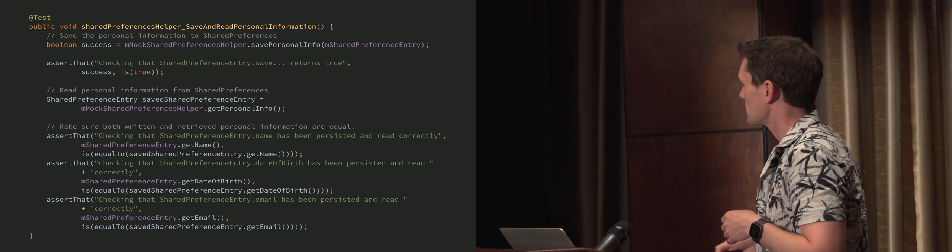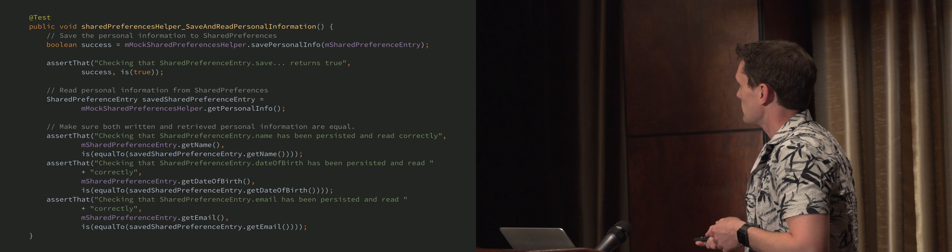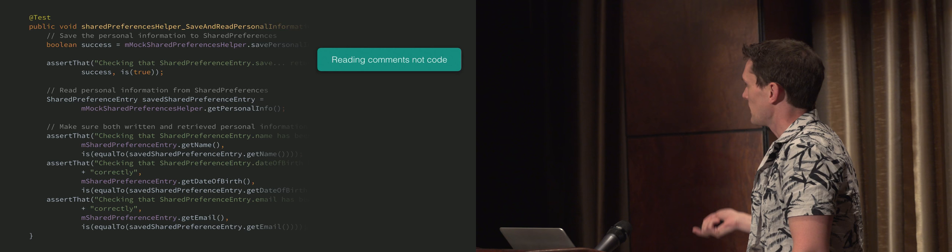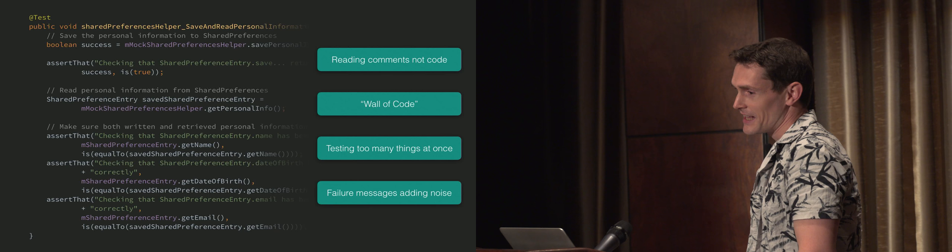I've taken various examples. Some of these are kind of anonymized slightly, some of them from public repos and things. This is an enormous block of code, and this is supposedly a single test. Don't try and parse too much of it — your head will explode. It's got all sorts of issues: there's comments all over it, and the comments are telling us that the code is not readable. We've got a wall of code here — it's a huge block. We're testing too many things. In fact, you can tell that because there's an 'and' in the test name, which is a dead giveaway. And we've got failure messages in here because the assertions are so unclear that we kind of need to have these extra strings to tell us what actually failed, and they're adding noise when you actually want to read the test.